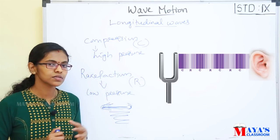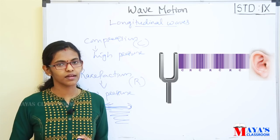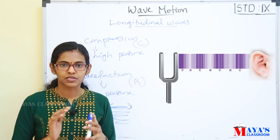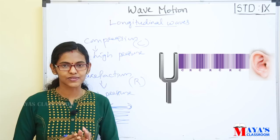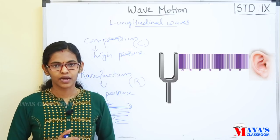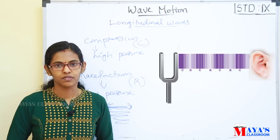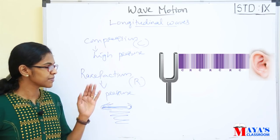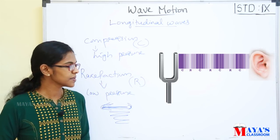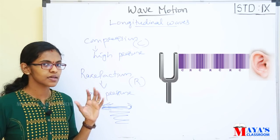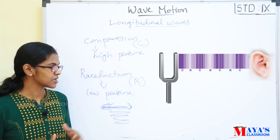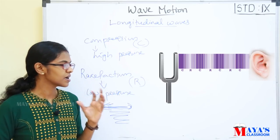Now let's talk about the sound as a longitudinal wave. A tuning fork sound is a longitudinal wave. There is no sound without vibration. The sound is traveling — there are air particles that have a high pressure area and a low pressure area; that is the longitudinal wave. The sound waves have the same high pressure area and compression area.